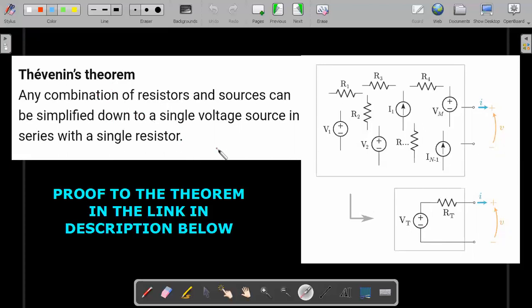So the proof to the theorem is in the link in the description below. It's a big write-up in which not only Thevenin's theorem, even Norton's theorem is discussed. So those who are really curious about the proof, I couldn't include it in the video because it becomes very lengthy, but it's a very simple one. So you just need to go through that link in the description below. Now that we have established the theorem, you can replace any circuitry like this with a simple equivalence like this, this is called Thevenin's equivalent.